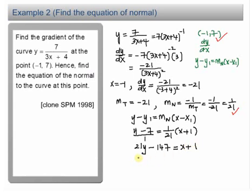Arrange everything here. You have 21y. X, you bring over, you have negative x. Minus 147 minus 1, you have minus 148. This is your equation of normal.